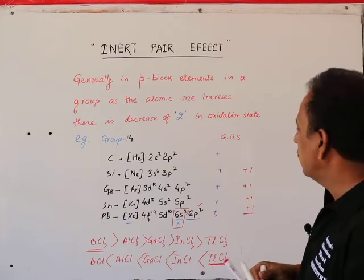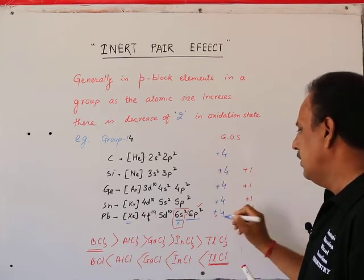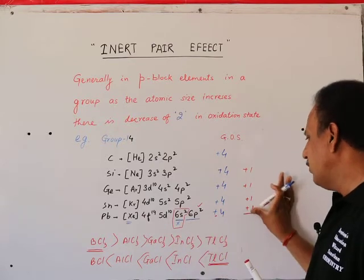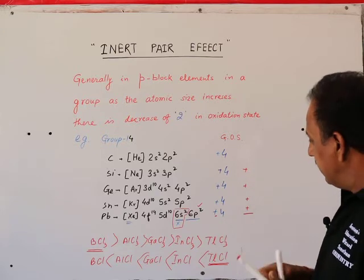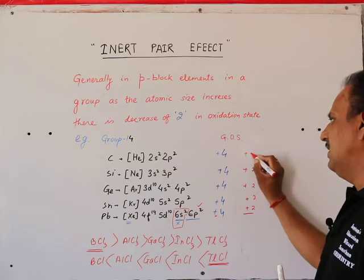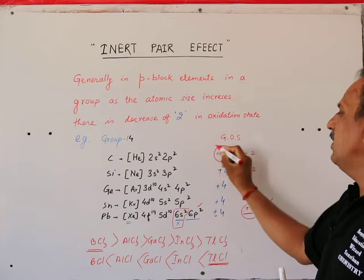The common oxidation state is +4, but as size increases, there's a decrease of 2. So these elements also show +2 oxidation state. The +2 tendency increases down the group while +4 tendency decreases.